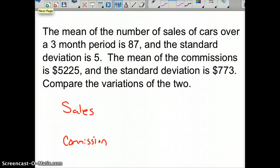Okay, so what we do for the C var would be equal to - for the sales, our standard deviation is five, and our mean is 87. And then we take that times 100% to convert it to a percent. And so that would give me, if you multiply that out, that would give you 5.7%.